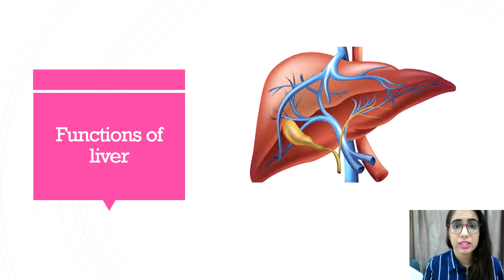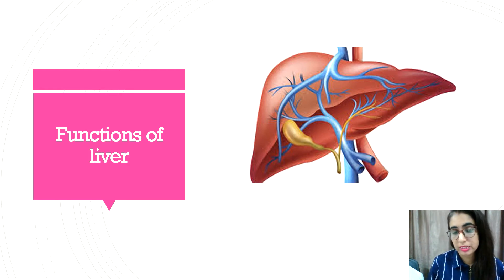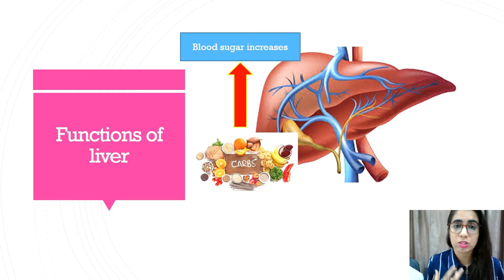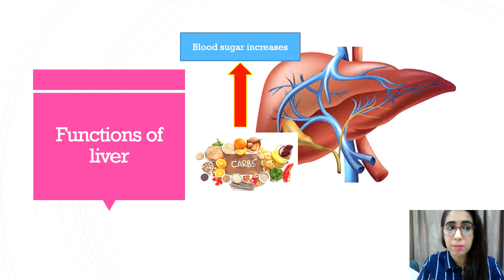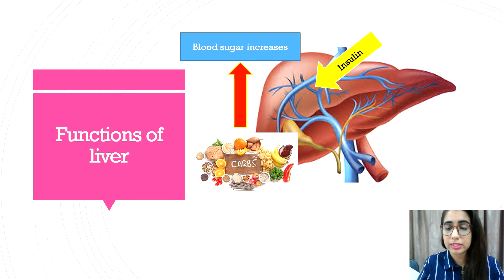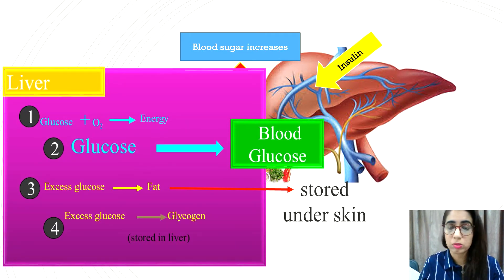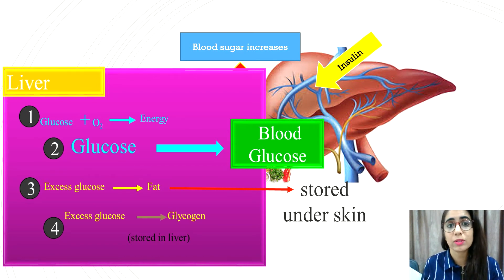Let's look into the functions of the liver in assimilation of digested food. The liver functions in metabolism of digested carbohydrates and proteins, detoxification, and storage of nutrients. Regarding carbohydrate metabolism, blood sugar level increases when we consume food rich with carbohydrates. High sugar level stimulates the secretion of insulin, which is carried to the liver. Insulin helps reduce blood sugar level by stimulating the conversion of excess glucose into glycogen for storage, the conversion of glucose into lipids stored in adipose tissue under the skin, and the absorption of glucose into body cells for cellular respiration.